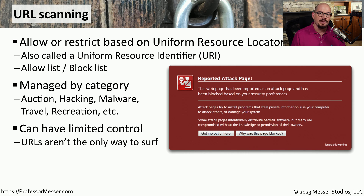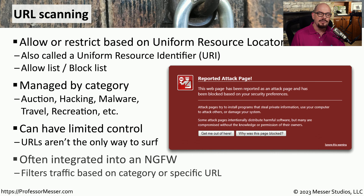URL filters are very good at controlling the information that you see inside of a browser window. But obviously, there are many different ways to access data on the internet. We'll not only talk about controlling information in a browser, but we'll talk about other ways to provide content filtering as well. There used to be a big market for standalone URL filters, but these days this URL filtering capability is commonly built into next-generation firewalls, so you need one single device to manage all of your firewall rules, IPS, and URL filtering.